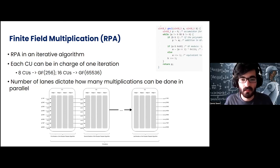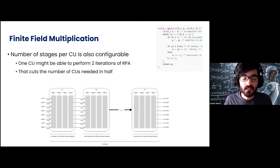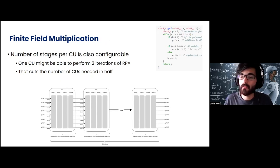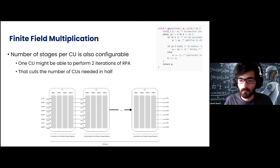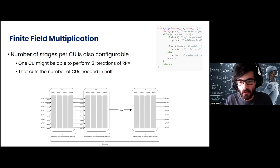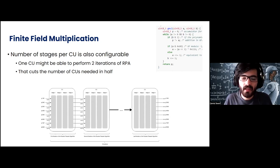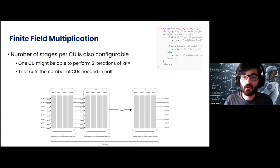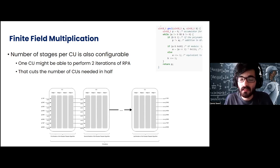The number of stages per compute unit is also configurable. In our Tofino proof of concept, we were able to perform each iteration of the Russian peasant algorithm using two stages. The Taurus paper uses four stages per CU in their testbed, and 16 lanes per CU, though we have reduced them to eight. If we have four stages per CU and each iteration of RPA only takes two stages, we can cut the number of compute units in half — so instead of needing 128 CUs for GF(2^128), we might just need 64 CUs.